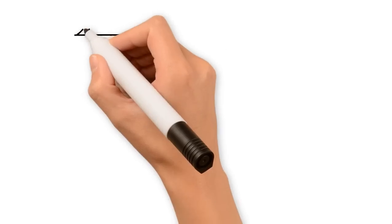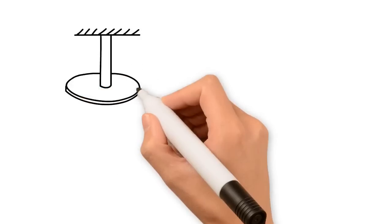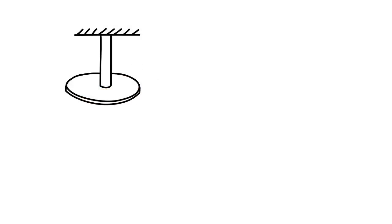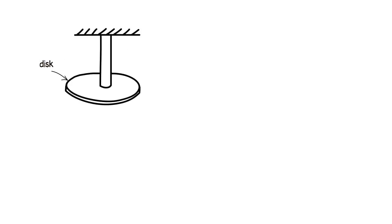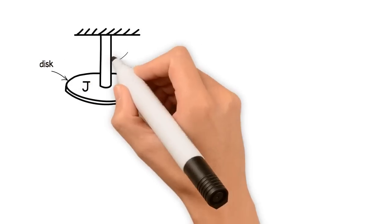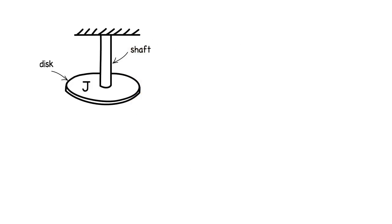Now let us look at the case for rotational motion, where we have a disc attached on a shaft fixed on the rigid wall, where the disc has second mass moment of inertia J, and the shaft has torsional stiffness constant kr.